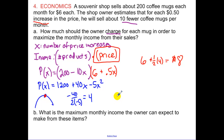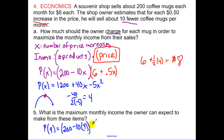For the maximum monthly income, we find p(4): 200 minus 10 times 4 gives 160 mugs, multiplied by the price of $8 found in part a, giving a maximum monthly income of $1,280.